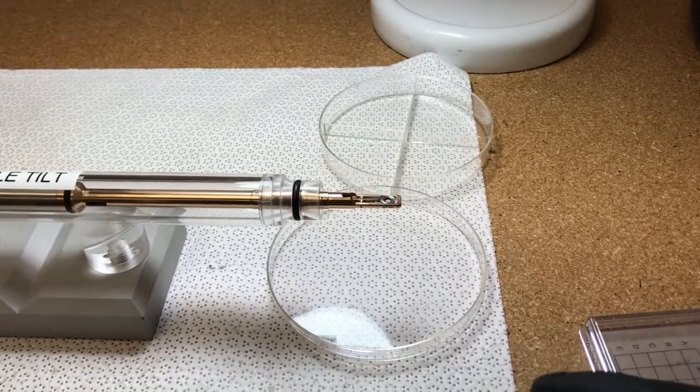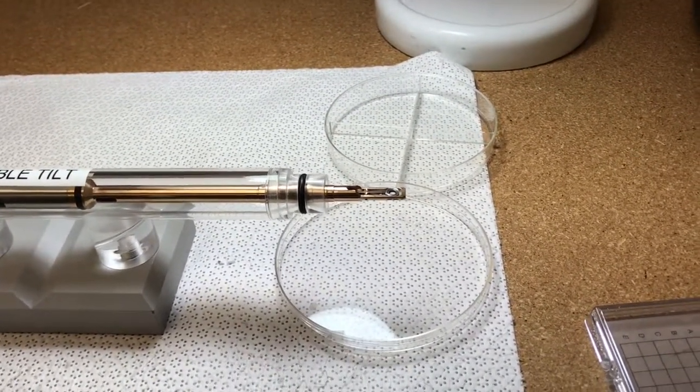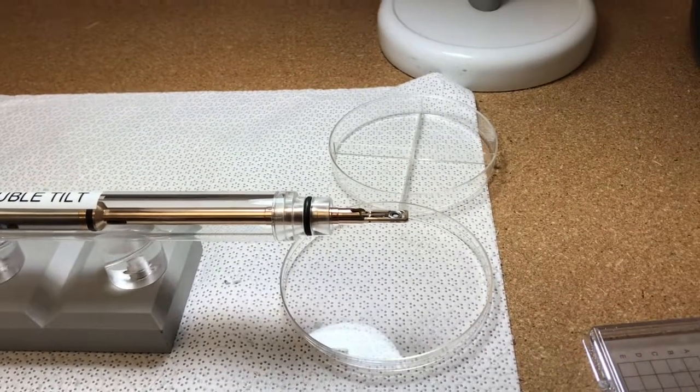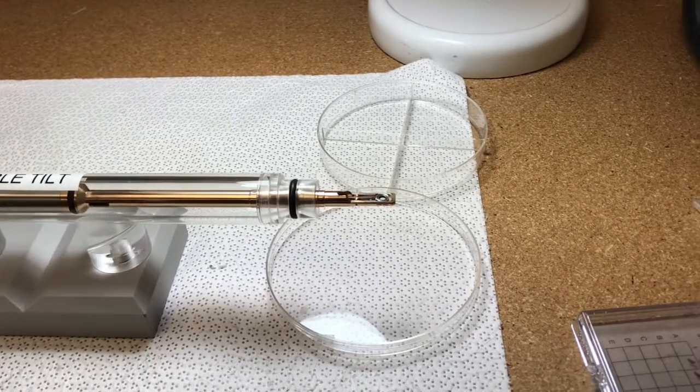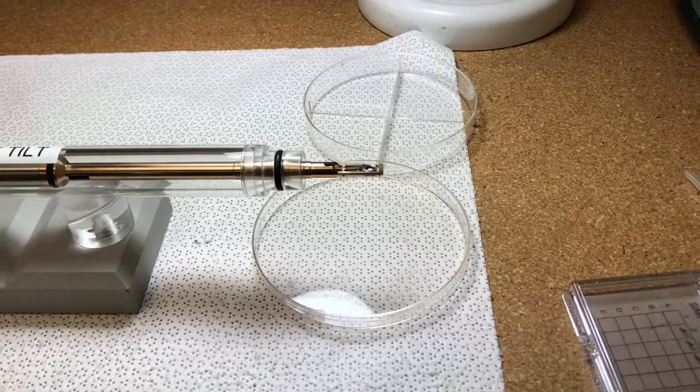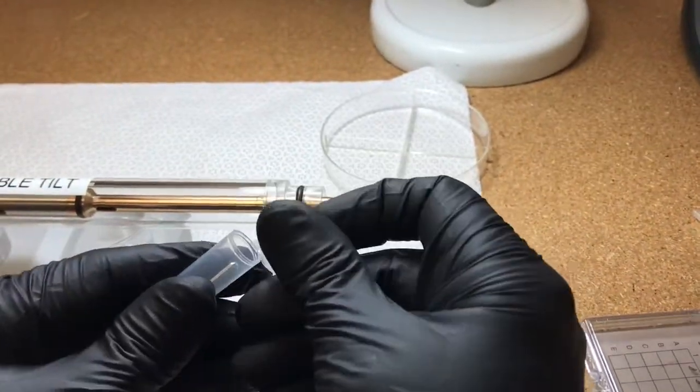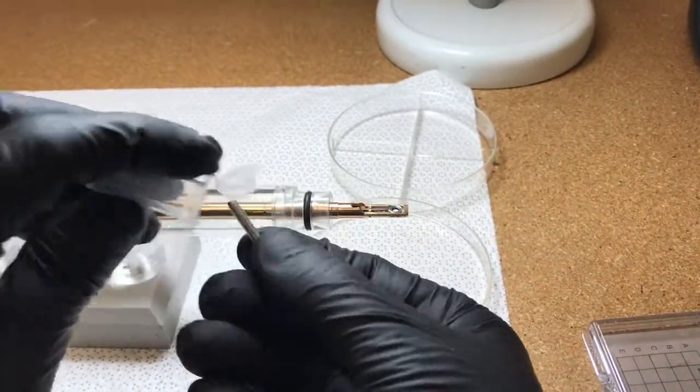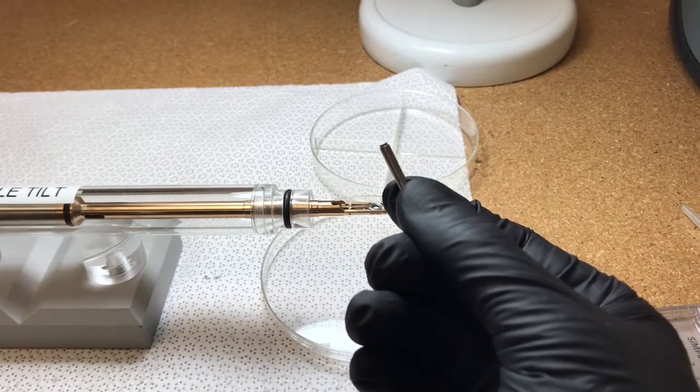This specific double tilt holder uses a hex ring locking mechanism, so we have a special tool needed to remove the hex ring, which we keep stored here.